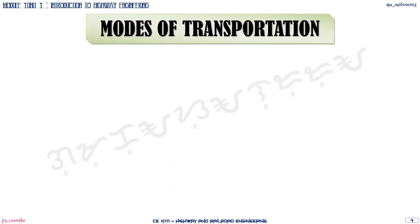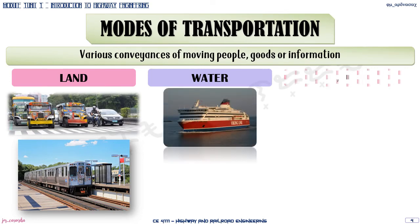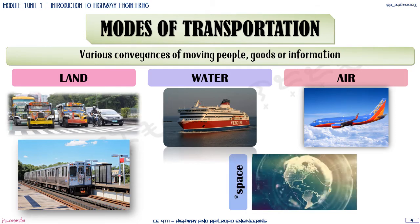For transportation, there are different modes. These are the various ways of moving people, goods, or information. We have three major modes: land, water, and air. An additional mode specifically for information could be through space. For our subject, CE 411-1, we will only be focusing on the mode of transportation through land.